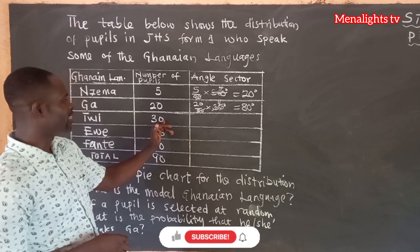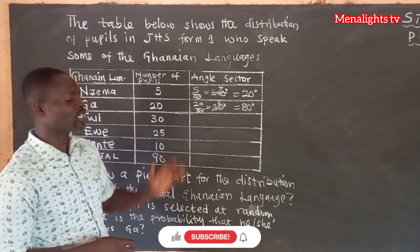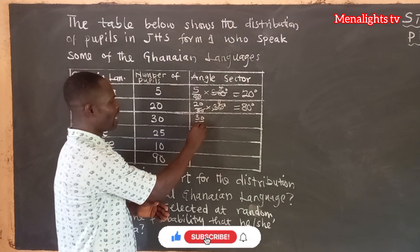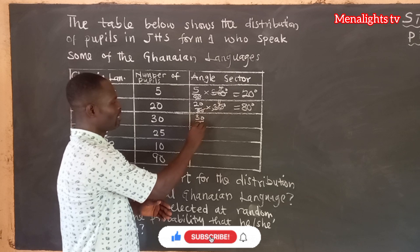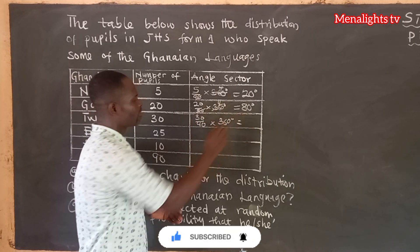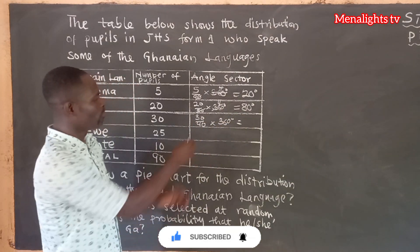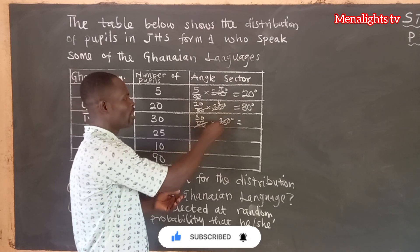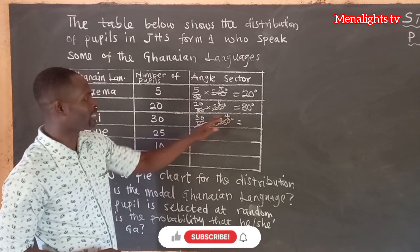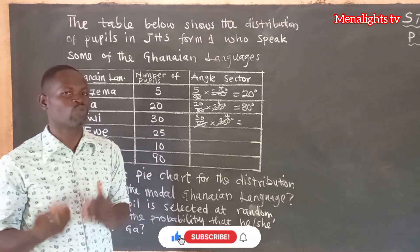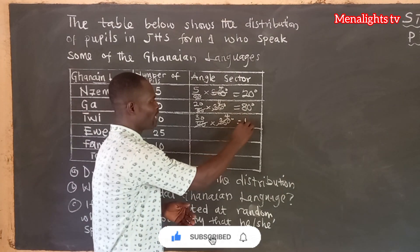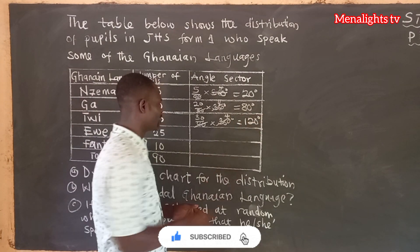Then we come to Twi, which has 30 students. So 30 over 90 times 360 degrees. 90 goes into 360 four times, and 4 times 30 gives us 120 degrees.